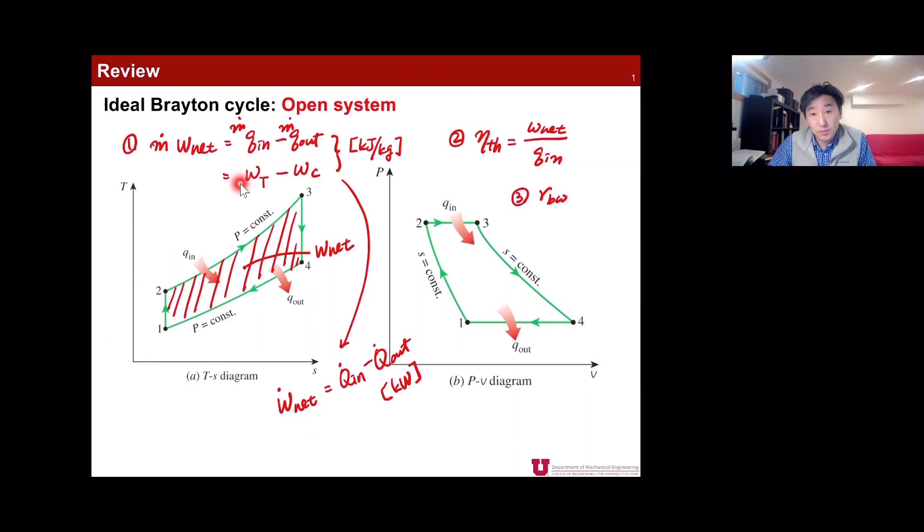We also learned a very unique parameter of the gas turbine, which is back work ratio. That is defined as W_C over W_T, the compression work divided by turbine work. The back work ratio means how much work is being used by the compressor from the power that is generated by the turbine.